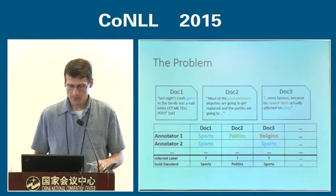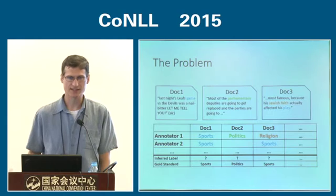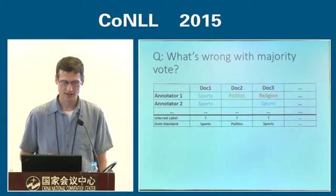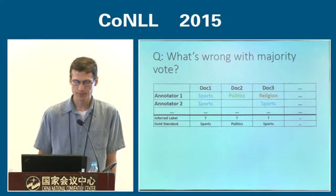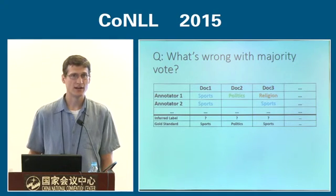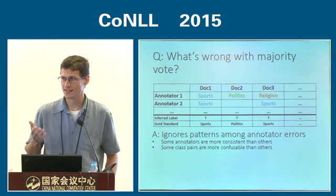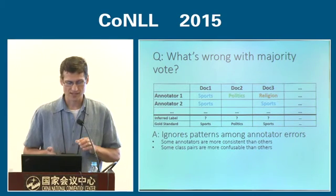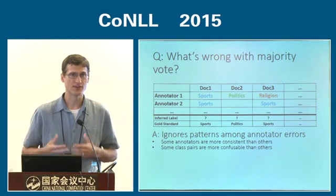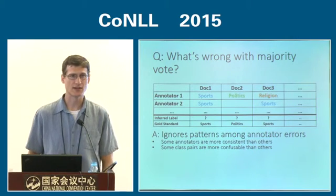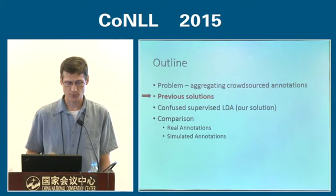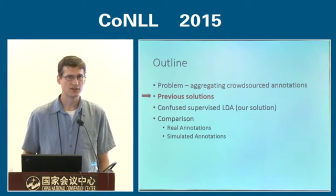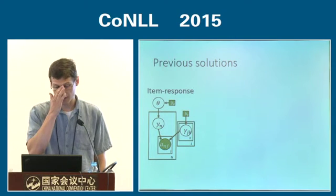We want to make use of all this evidence to infer a label. What's wrong with majority vote? It works surprisingly well, but it does ignore important information: some classes are more confusable than others, some annotators are more consistent or reliable than others, and sometimes there are patterns in the errors they make. None of these are captured by majority vote.